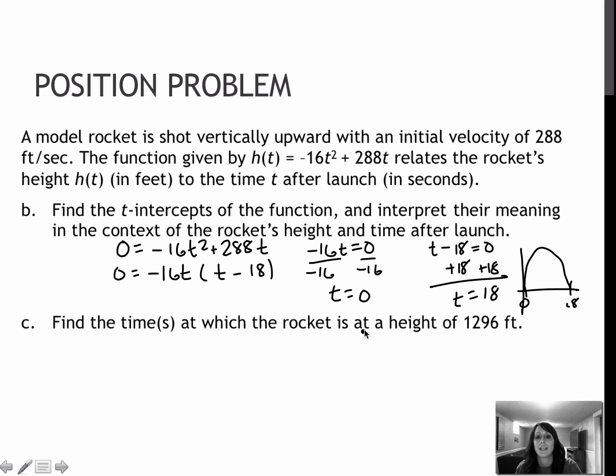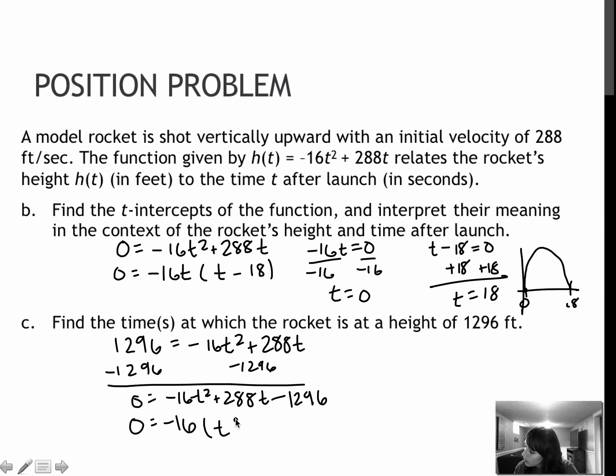Last one, find the times at which the rocket is at a height of 1296 feet. So instead of zero here, because I'm not trying to find where it's at zero feet, I'm trying to find at 1296 feet. So instead of zero, 1296. Again, I can only solve when it's equal to zero. So I'm going to subtract that 1296 from each side. And get zero equals negative 16t squared plus 288t minus 1296. I would take out a GCF of negative 16, which leaves me with t squared minus 18t plus 81.